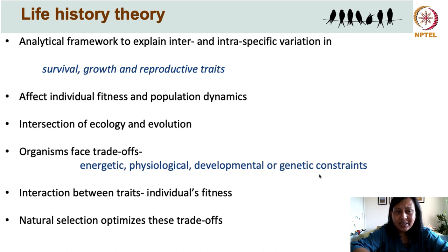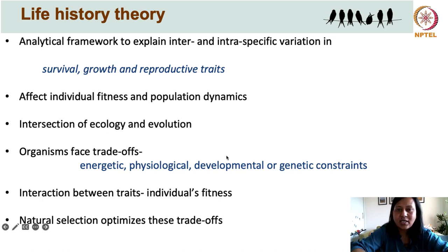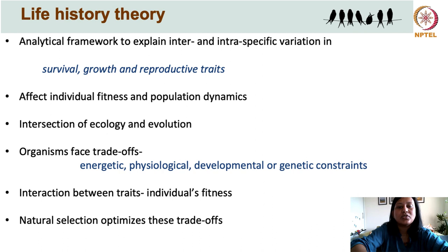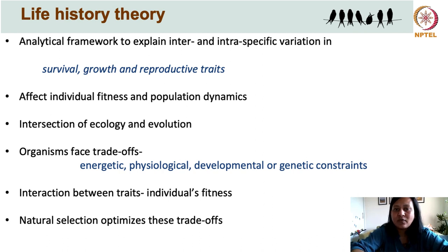Based on these trade-offs and the interaction between traits of survival, growth, and reproduction, these all go on to decide an individual's fitness in its lifetime. Over generations, natural selection optimizes these trade-offs to arrive at a set of traits that give the best outcome in terms of individual fitness within a population in a given set of environmental conditions.